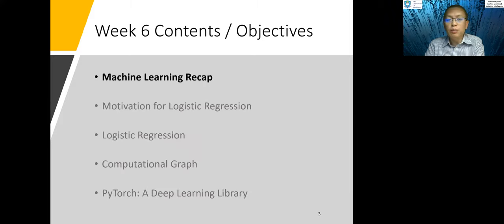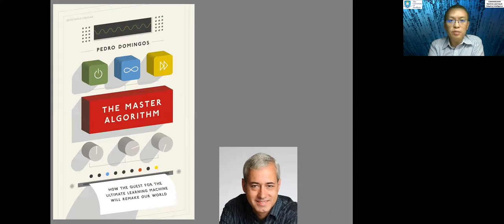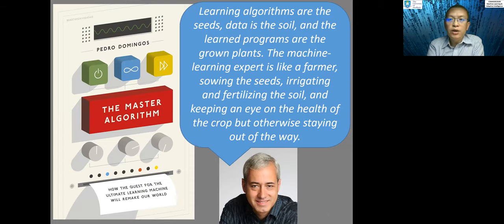Firstly, some important issues about machine learning. There are many analogies for machine learning, but I like this one the most, which is in the book, The Master Algorithm by Pedro Domingos. He said, learning algorithms are the seeds, data is the soil, and the learned programs are the grown plants. The machine learning expert is like a farmer, sowing the seeds, irrigating and fertilizing the soil, and keeping an eye on the health of the crop, but otherwise staying out of the way.